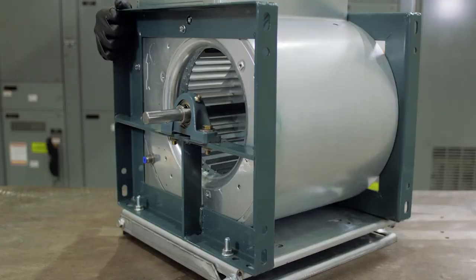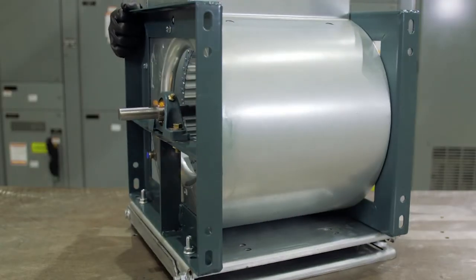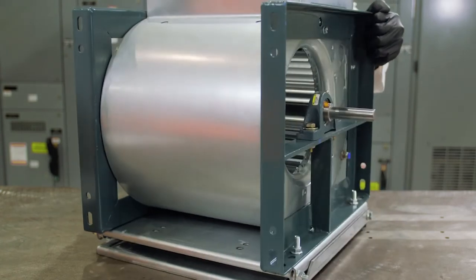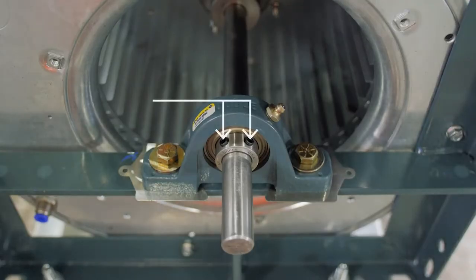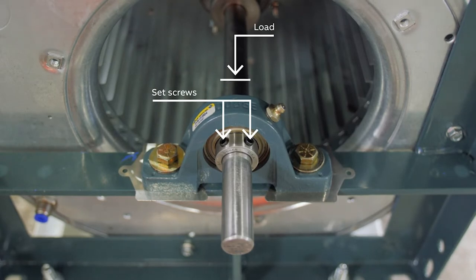The next step is to fasten the bearings to the shaft. To minimize unbalance in the system, position the set screws for each bearing in the same location radially. Set screws should be tightened in the same direction that the load is acting. Failure to do so could result in insufficient holding power.